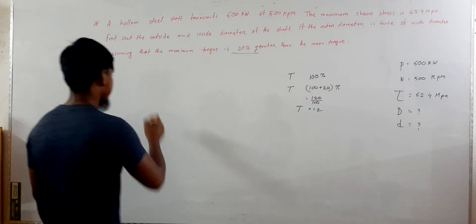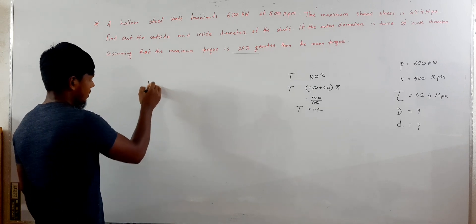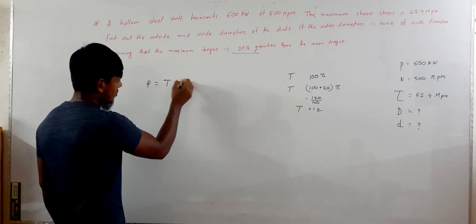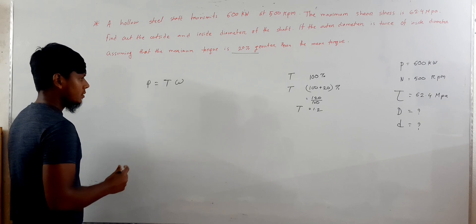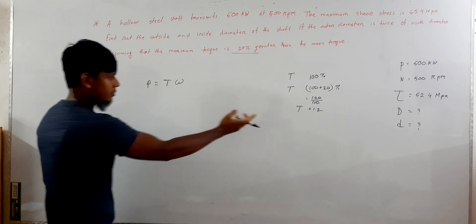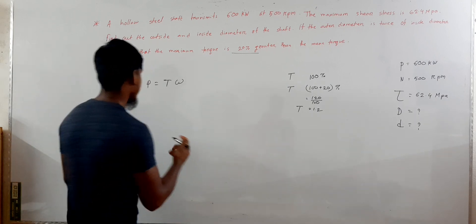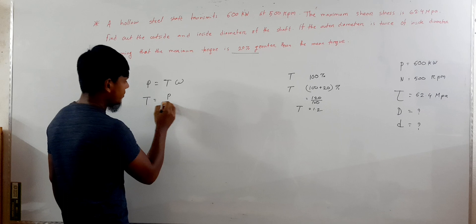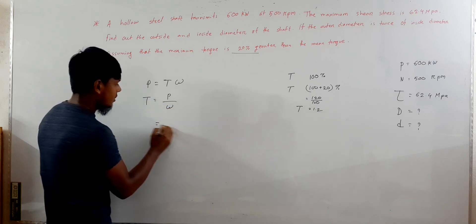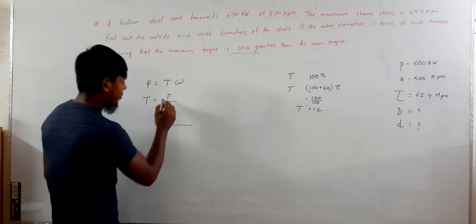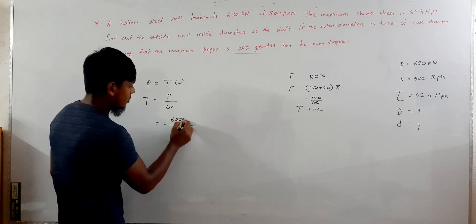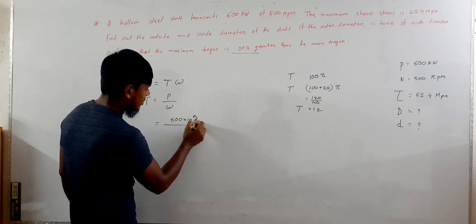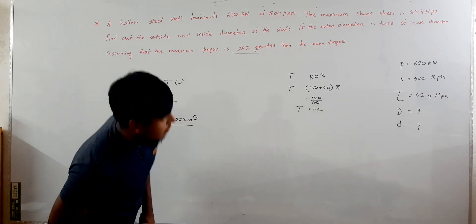Power equals torque multiplied by omega. So torque equals power divided by omega. This gives us the mean torque from the given power value.